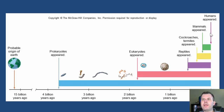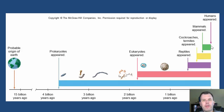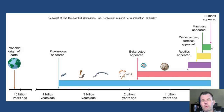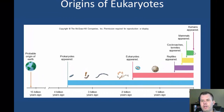It's interesting — humans appeared really at the end of the scale. If you think of this like a clock on the wall, say the earth formed at midnight on Sunday morning. You go all the way around 24 hours to 11:59 and 59 seconds of Sunday night into Monday morning — that's when you'd finally see humans appearing on the earth. It takes a lot of time to make organic molecules, then prokaryotes, then eukaryotes, and then evolution proceeds in steps.